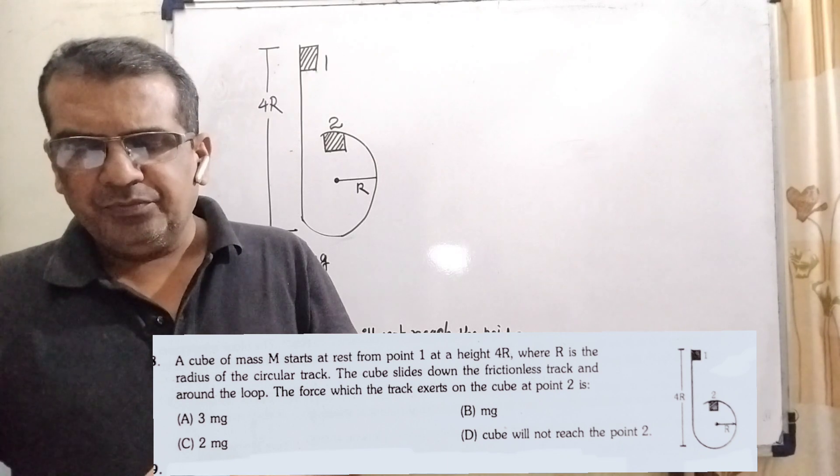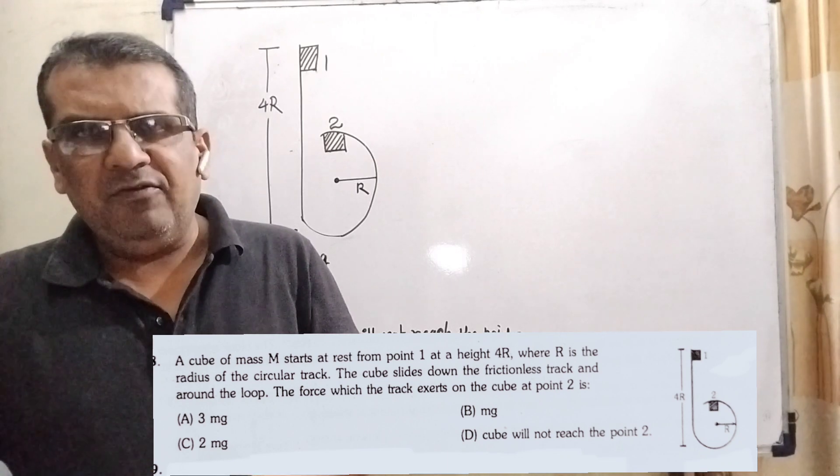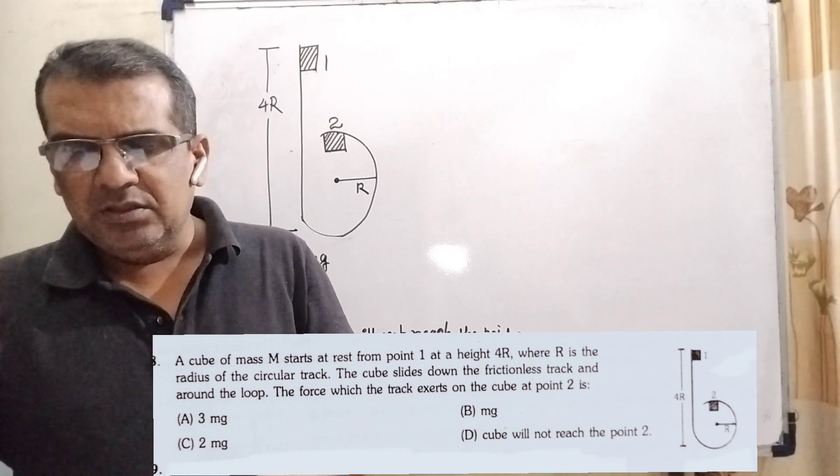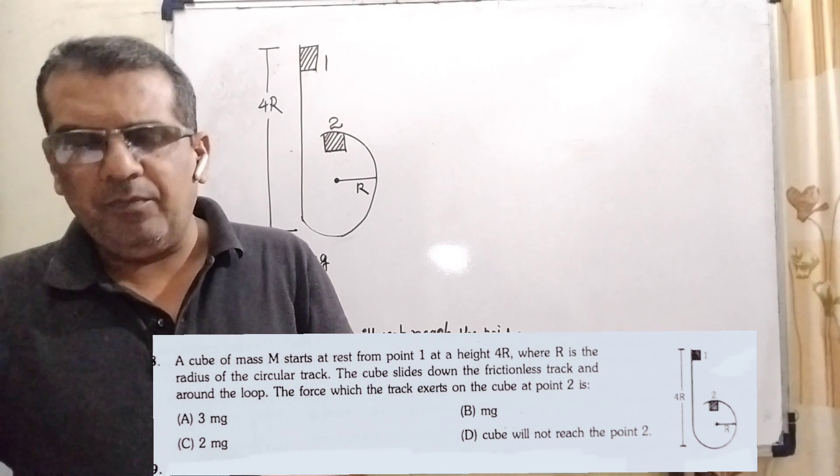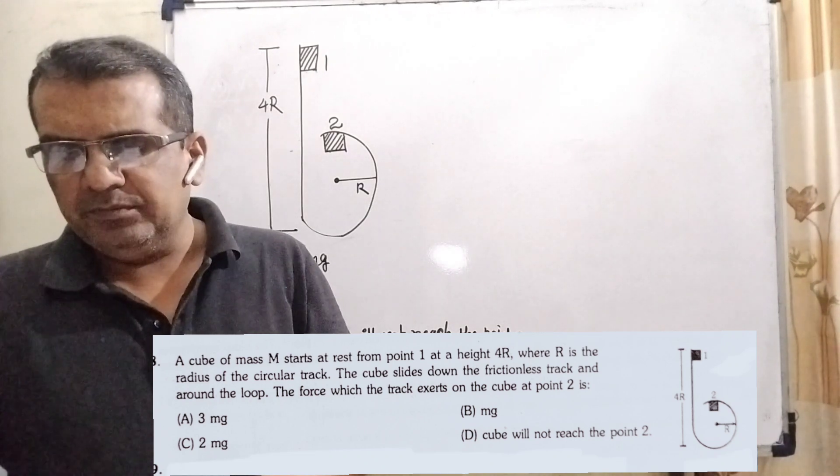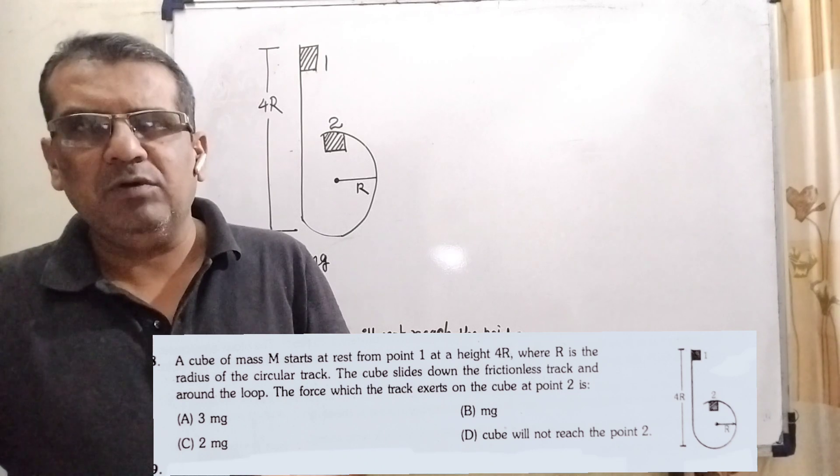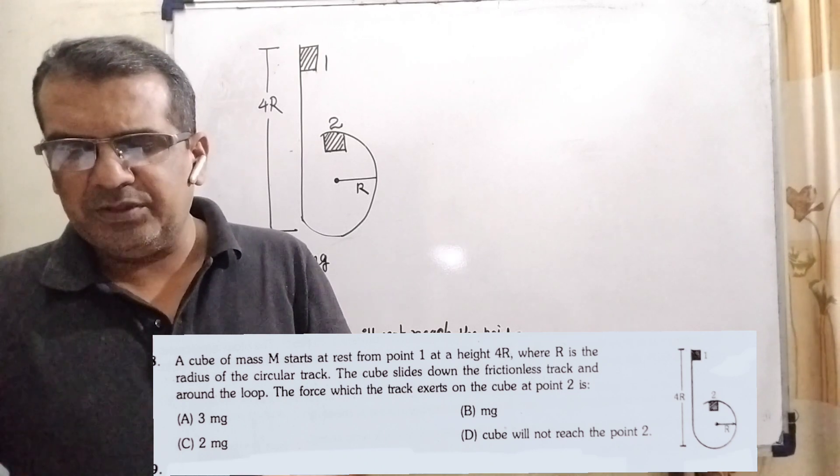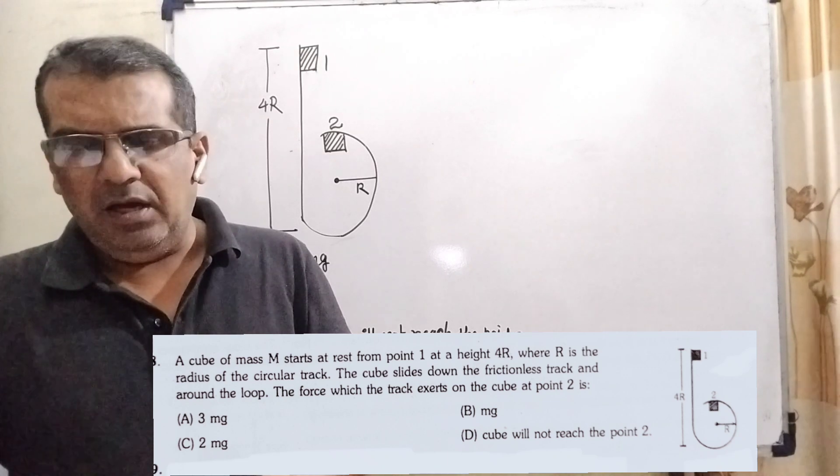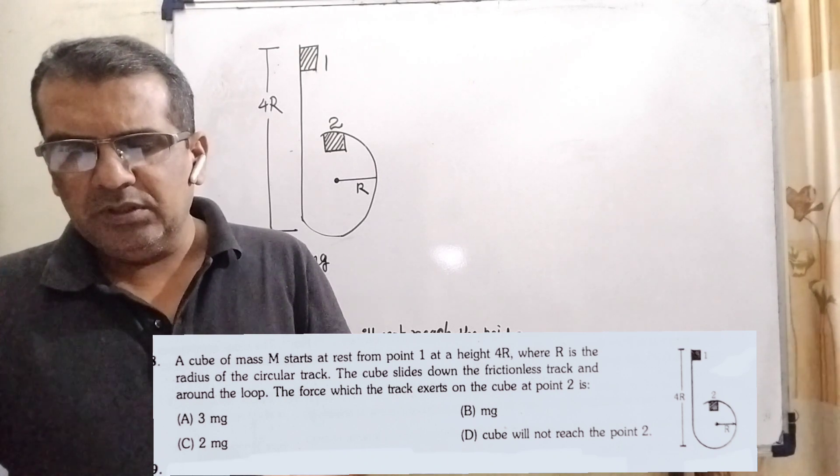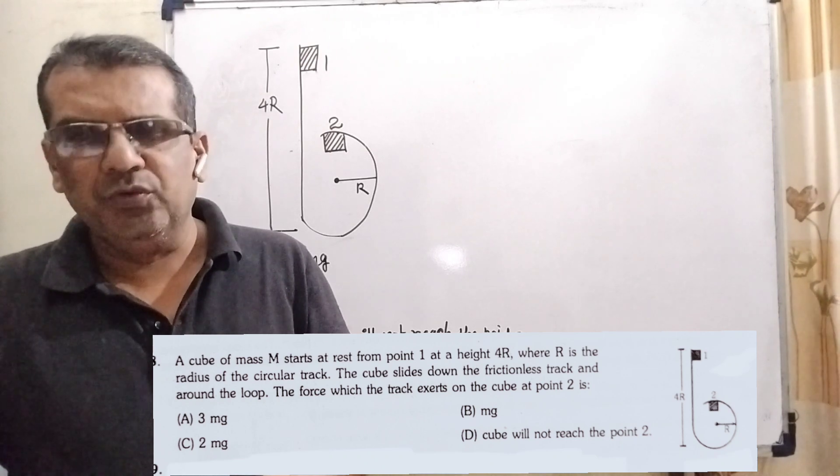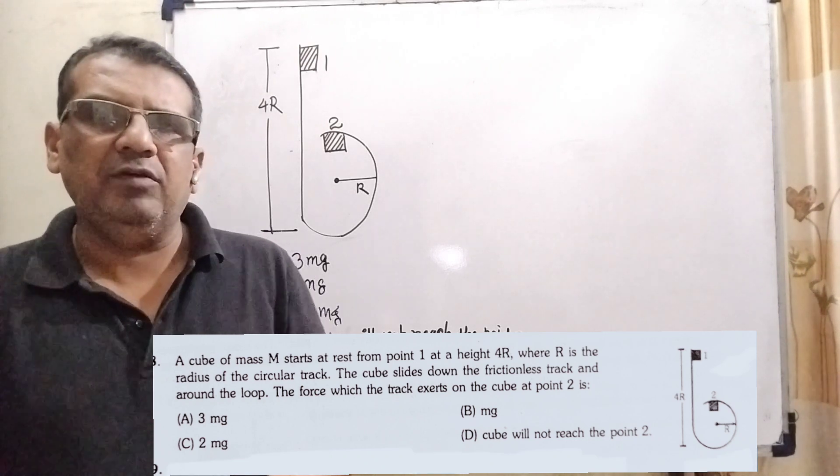Now here is the question. A cube of mass capital M starts at rest from point 1 at a height 4R, where capital R is the radius of the circular track. The cube slides down the frictionless track and around the loop, the force which the track exerts on the cube at point 2 is. Here we have given four options.